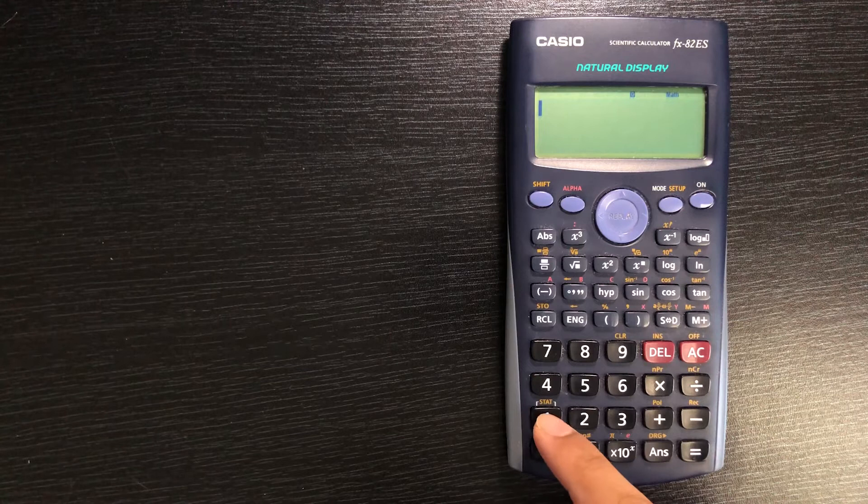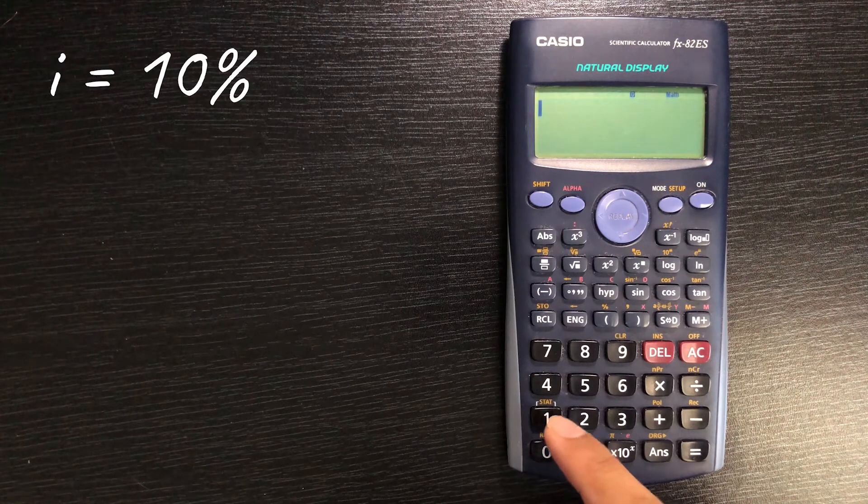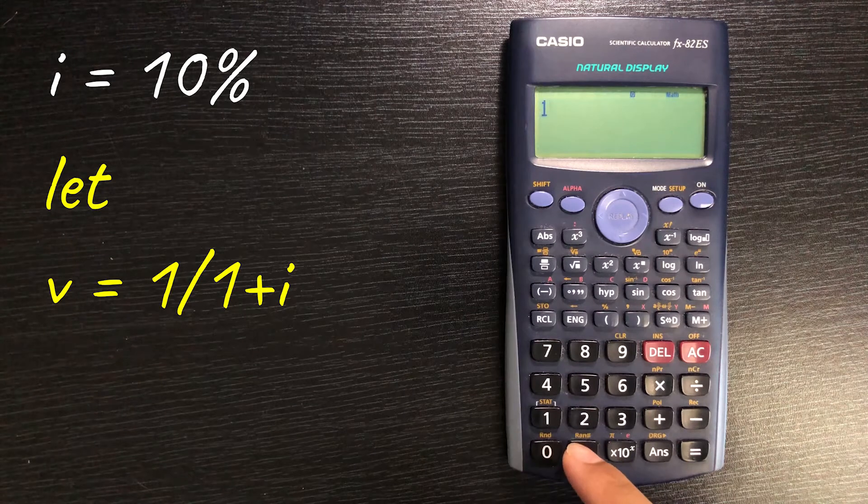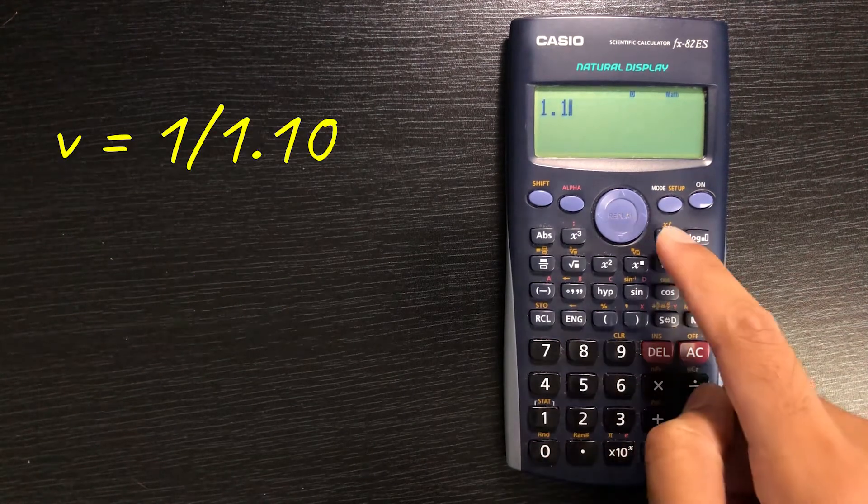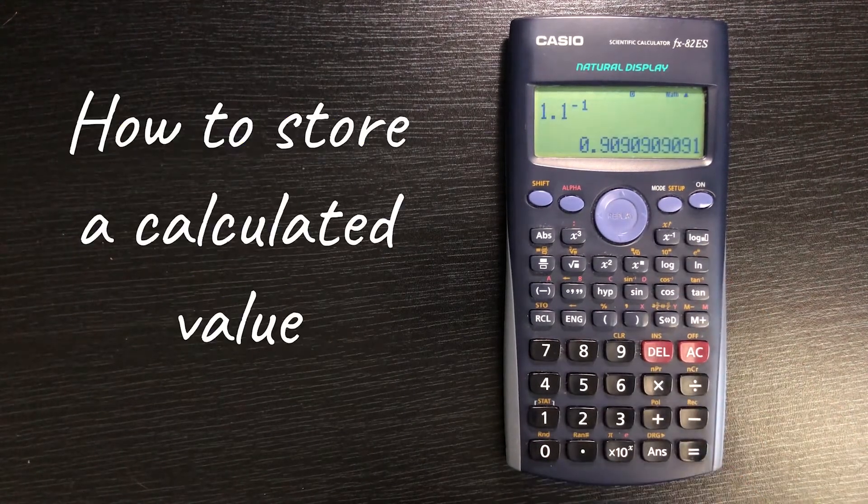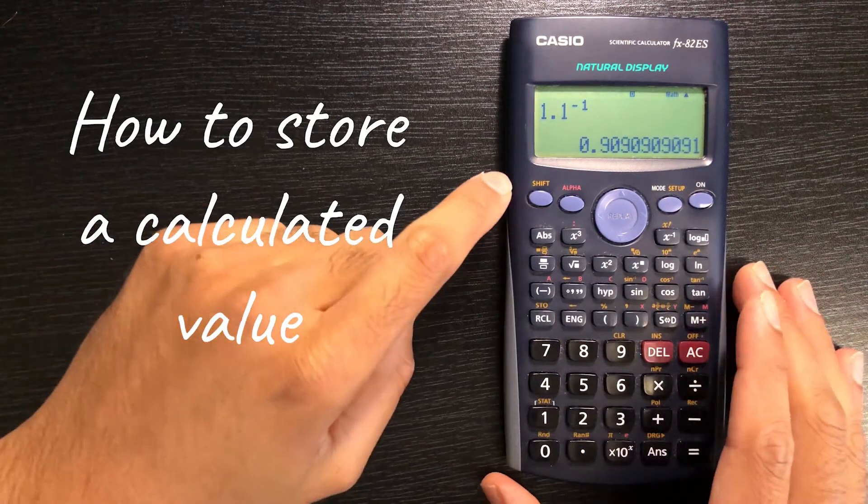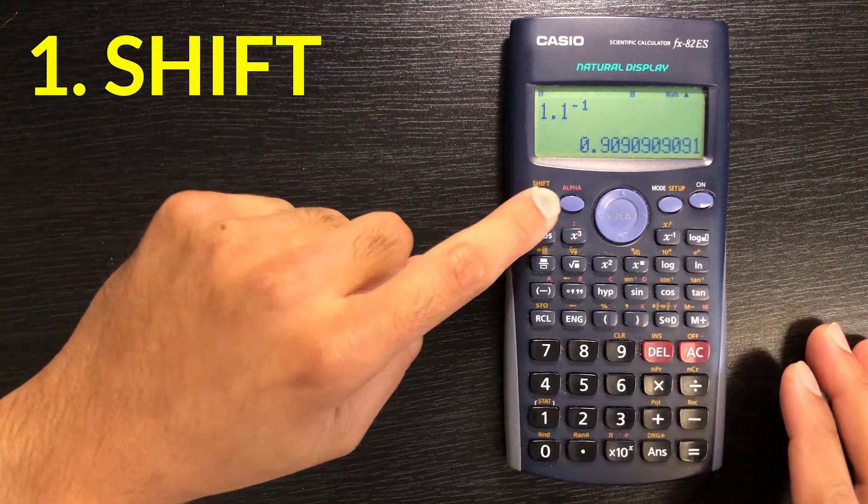So for example if I've got an interest rate of 10% and I want to calculate my V which I will do as follows. So that's V using an interest rate of 10%. If I want to store this I will press shift.